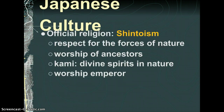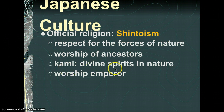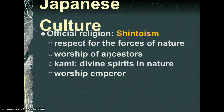Their official religion, or the most widely used religion, is Shintoism. Shintoism sounds a lot like Taoism, in that they have respect for the force of nature and kami, which are divine spirits in nature. It also involves worship of ancestors — think back to how the Chinese communicated with their ancestors using oracle bones. And the difference from the earlier time is they really worshipped the emperor.